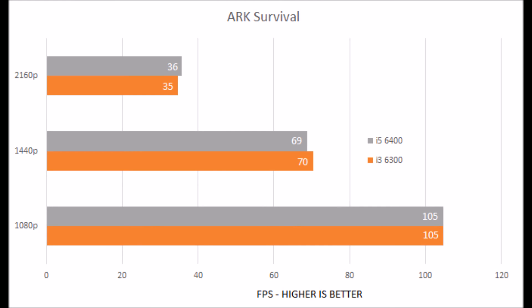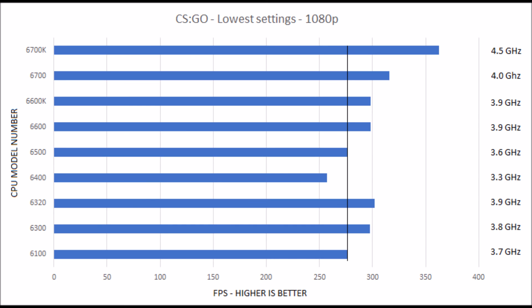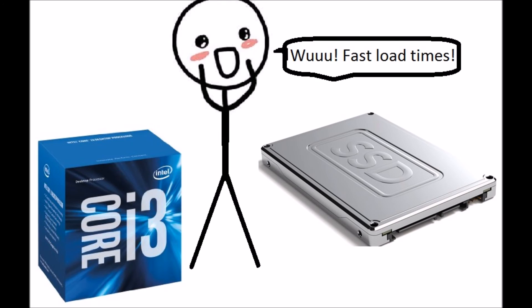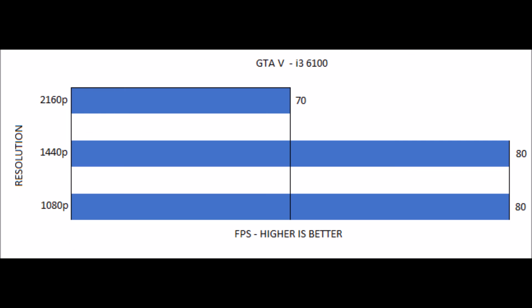So what does this prove? It proves that if you want to get into gaming, you do not need to go out and buy a big high-end CPU. If CS:GO is the only game you want to play, you're better off saving the cash from an i5-6400 and getting a 6100 and a lightning-fast SSD. And for all of you saying you can't play GTA 5 on an i3 — yes, yes you can, and even at 4K.